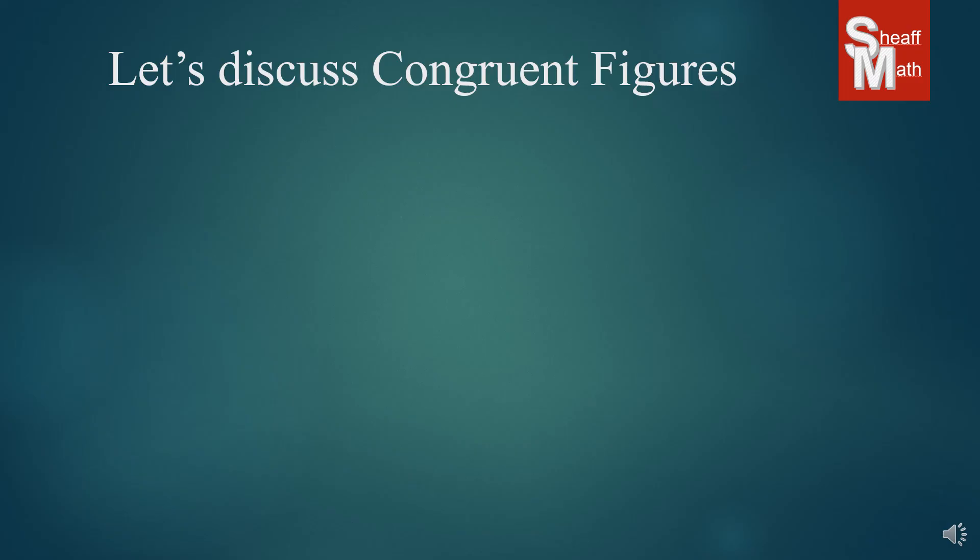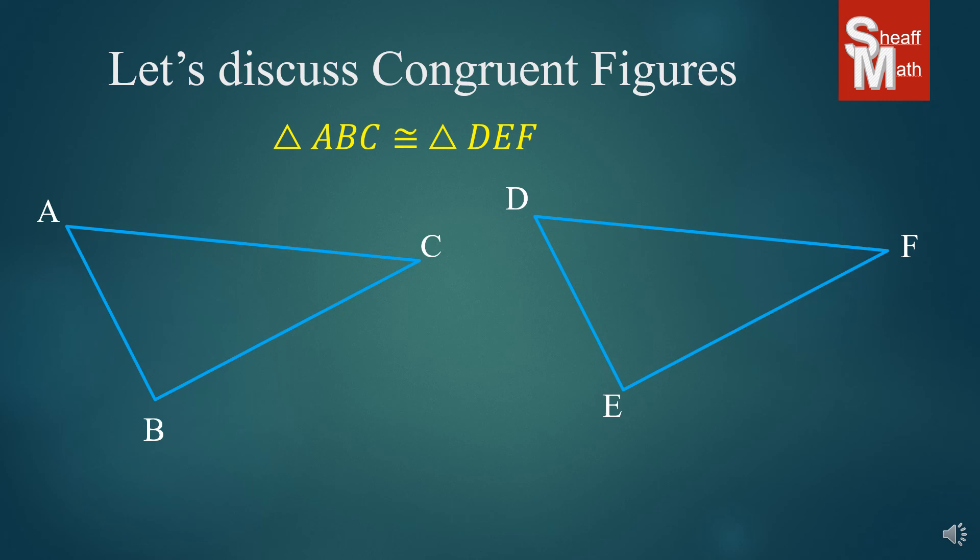Let's discuss congruent figures for a little bit. Now, if I had these two triangles, and I was told that triangle ABC was congruent to triangle DEF, then I would know that all of their corresponding sides and angles are equal. So let's first look at their sides.